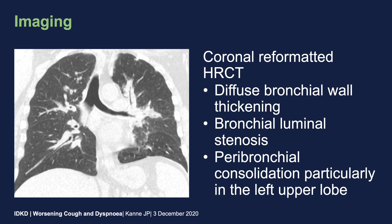He underwent chest CT for further evaluation. On this coronal reformatted image, we see diffuse bronchial wall thickening, bronchial luminal stenosis, and peribronchial consolidation, particularly in the left upper lobe. There's relative sparing of the imaged portions of the trachea and main bronchi.